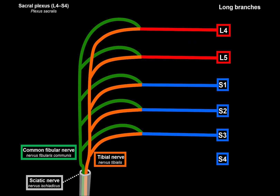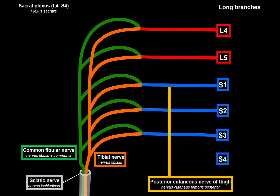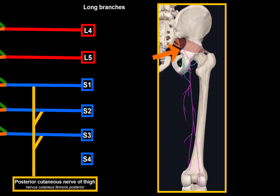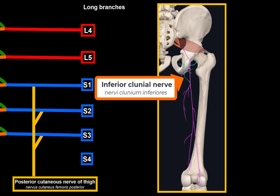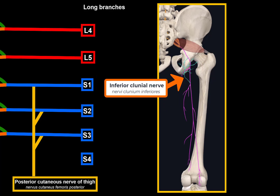The posterior cutaneous nerve of the thigh comes from S1, picks up branches from S2 and S3, exits through the greater sciatic foramen below the piriformis, and descends under the gluteus maximus along the posterior surface of the thigh — providing somatosensory innervation to the dorsal thigh and the skin over the popliteal fossa. It gives off the inferior clunial nerve for the distal gluteal region, and perineal branches for the perineal skin.